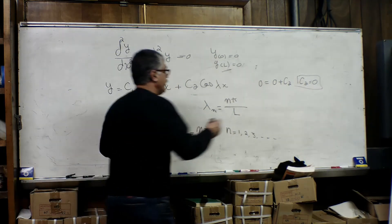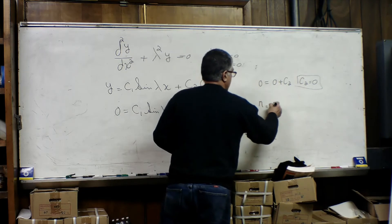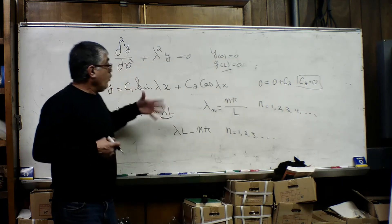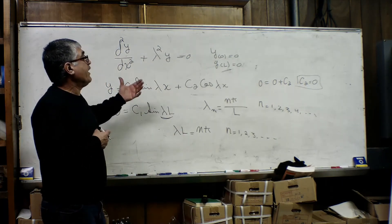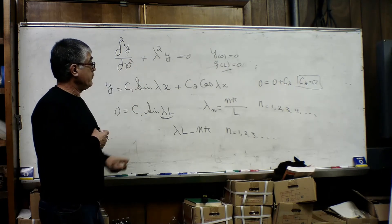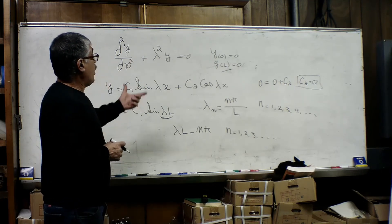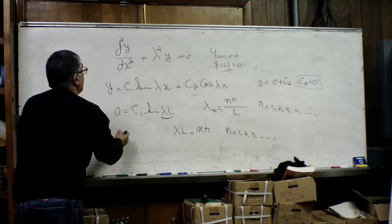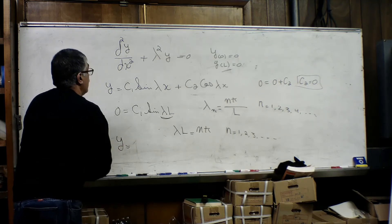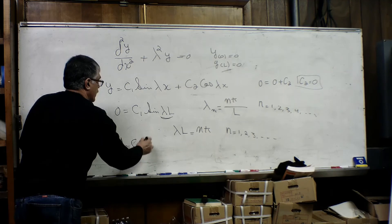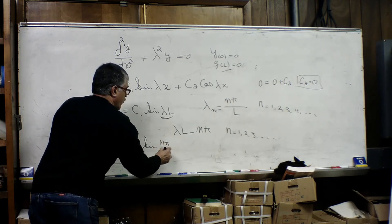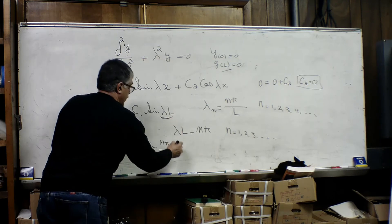So only for these values of lambda will we have a solution to this problem. So our general solution for this type of problem will be c1 sine of n pi over L times x.